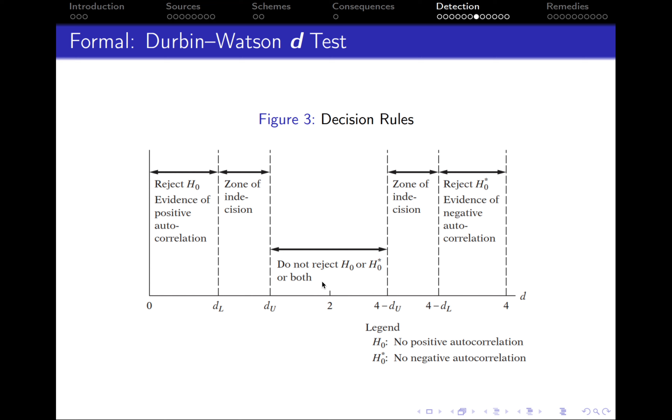If our estimated D statistic lies between 4 minus DU and DU, in this case, we do not reject the null hypothesis. So we say that there is no autocorrelation in this zone.